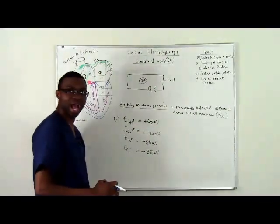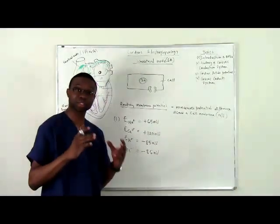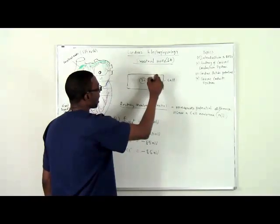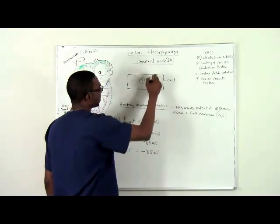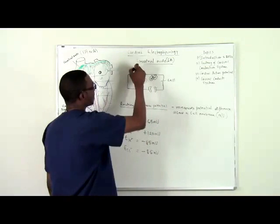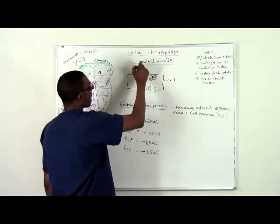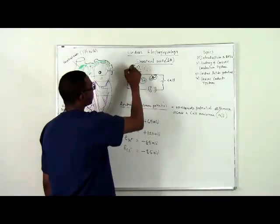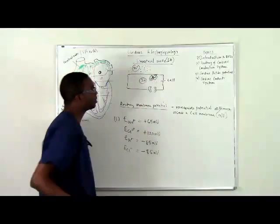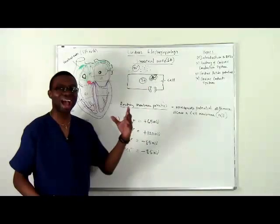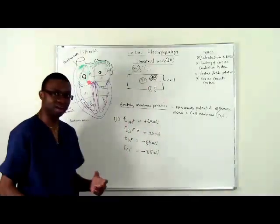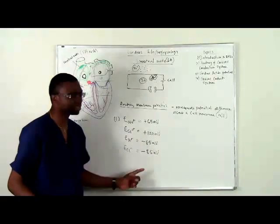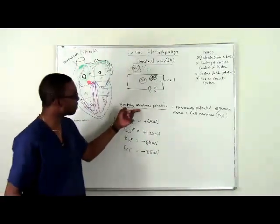Now let's take a look at a cell. A normal cell has a lot of potassium inside the cell, while there's a lot of sodium outside the cell. So: a lot of potassium inside, and a lot of sodium outside.